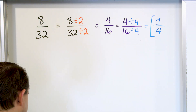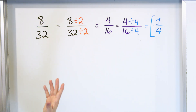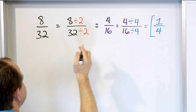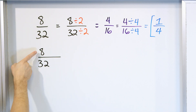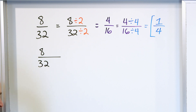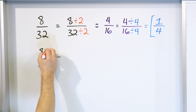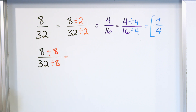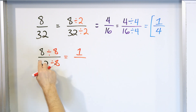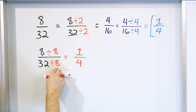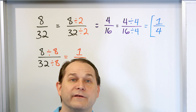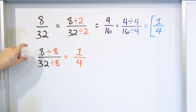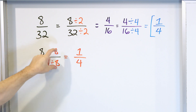So the answer is 1/4. Now let's solve this a different way. Is there something better we can divide by? We notice we have an 8 and a 32, and we know that 8 times 4 is 32. So we can divide the top by 8 and the bottom by 8 straight away. 8 divided by 8 is 1, and 32 divided by 8 is 4 because 4 times 8 is 32. You get the same answer, and notice how dividing by the largest common factor - the greatest common factor - means we only divide once.